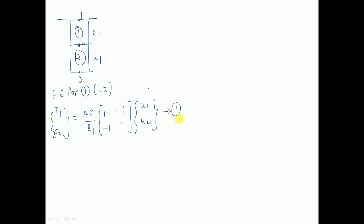We have to give notations here: element number one is connected with nodes 1 and 2, so we label the rows and columns as 1, 2 and 1, 2 like this.